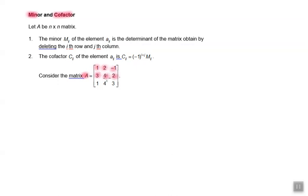Consider the matrix A with the elements 1, 2, negative 1, 3, 4, 2, 1, 4, 3. This is a 3 by 3 matrix.